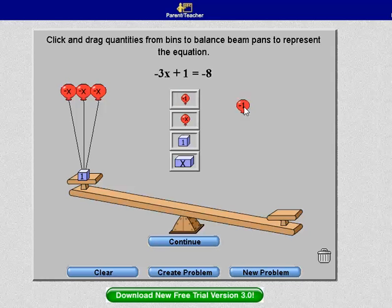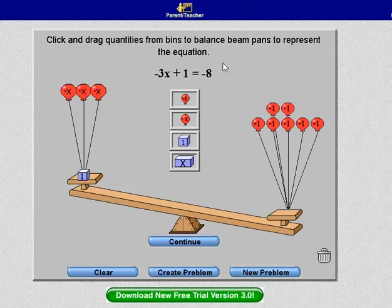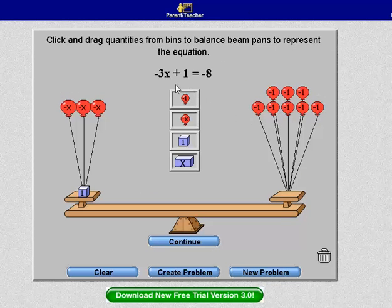And over here, I have negative 8. So I need to have negative 8 balloons over here. And once I have it set up, then it balances, and I can hit Continue.